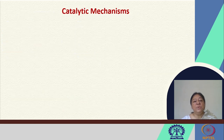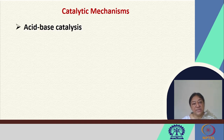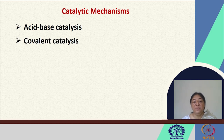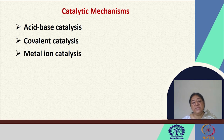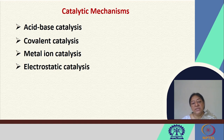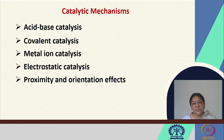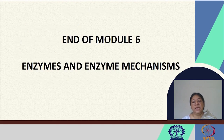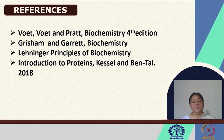In summary, looking at the catalytic mechanisms: we have looked at acid-base catalysis, covalent catalysis involving formation and subsequent cleavage of a covalent bond in proteolytic enzymes, and metal ion catalysis involving various metals and their roles. Electrostatic catalysis involves electrostatic interactions between specific residues in catalytic reactions. We also looked at proximity and orientation effects. This is the end of module 6, enzymes and enzyme mechanisms.